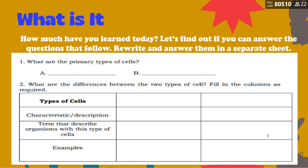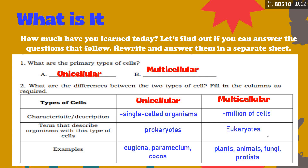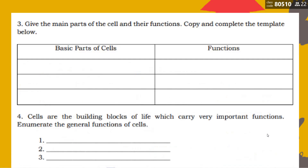For number one — what are the primary types of cells? They are unicellular and multicellular. For number two, we have the comparison: unicellular cells are single-celled organisms; multicellular cells have millions of cells. The terms describing these organisms: unicellular corresponds to prokaryotes, and multicellular corresponds to eukaryotes. Examples — for unicellular: euglena, paramecium, coccus; for multicellular: plants, animals, fungi, protists.